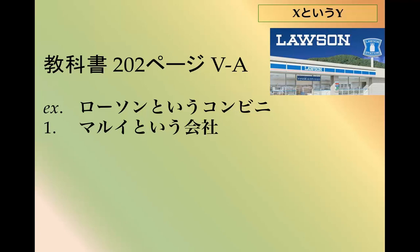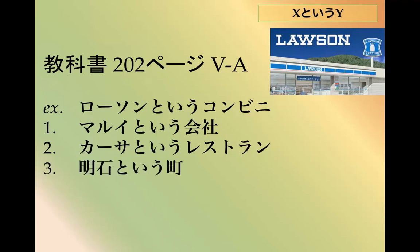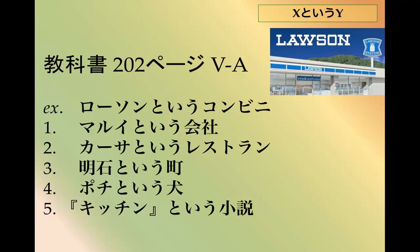Ichi: Marui to you kaisha — a company called Marui. Kasa to you restaurant — a restaurant called Kasa. Akashi to you machi — a town called Akashi. Pochi to you inu — a dog named Pochi. Kitchin to you shouzetsu — a novel called Kitchen.